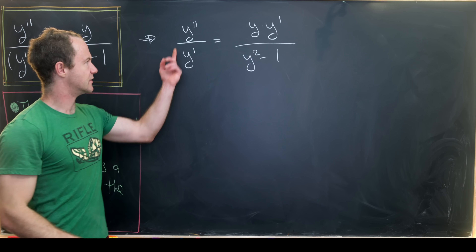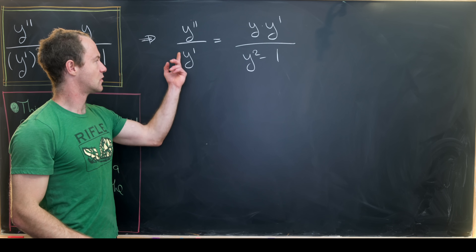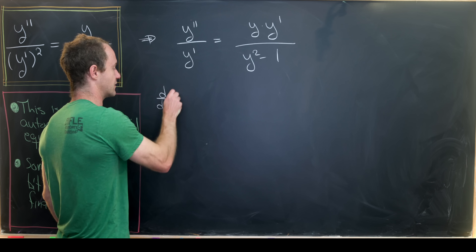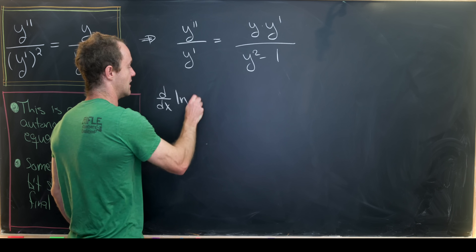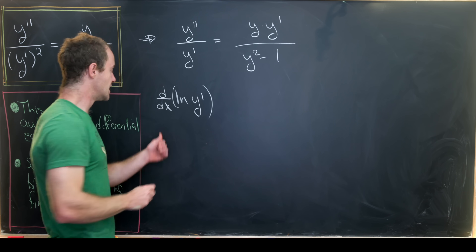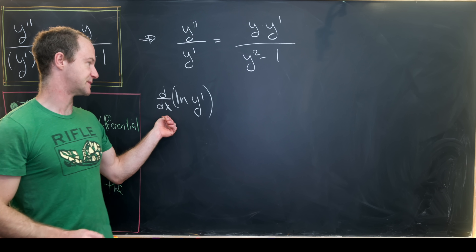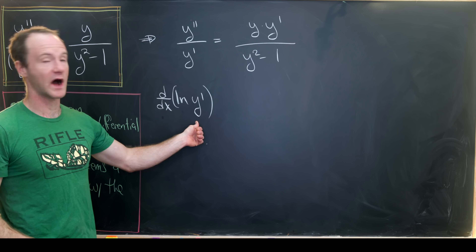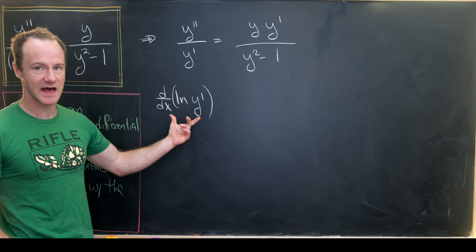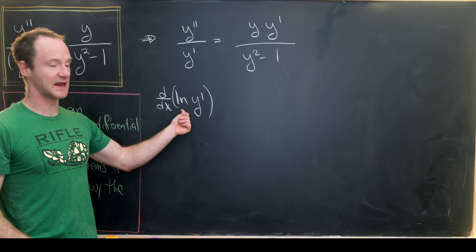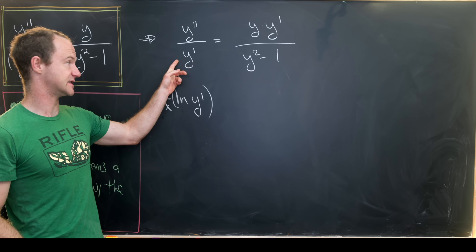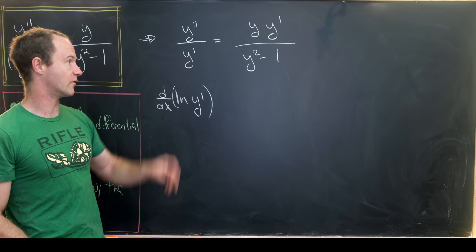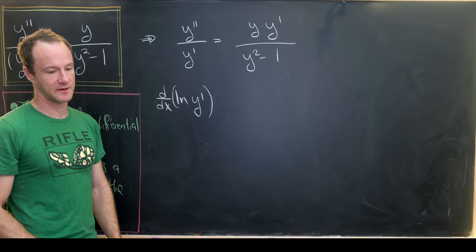Now notice that the left-hand side is really just a logarithmic derivative of y prime. I can write that as the derivative with respect to x of the natural log of y prime. That's because the derivative of the natural log will send y prime downstairs, and the derivative of y prime is y double prime.